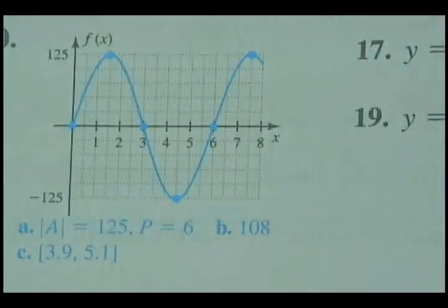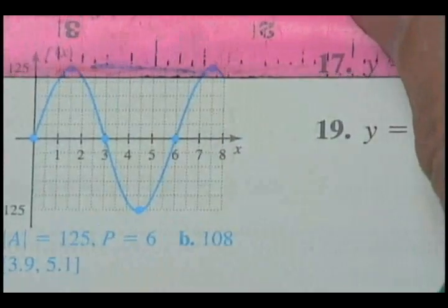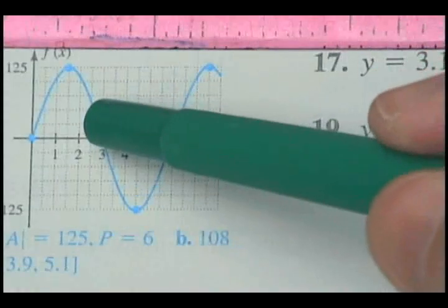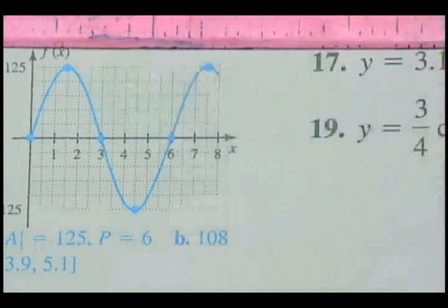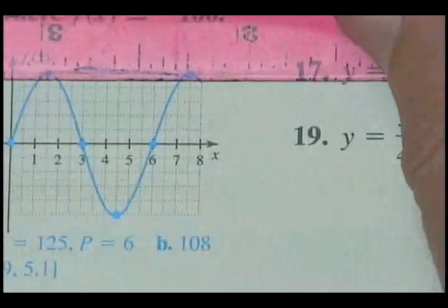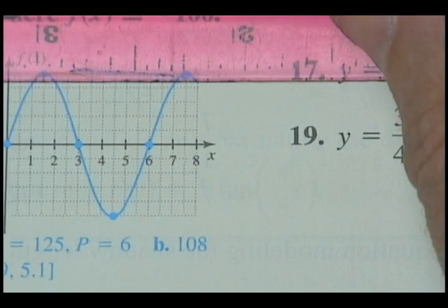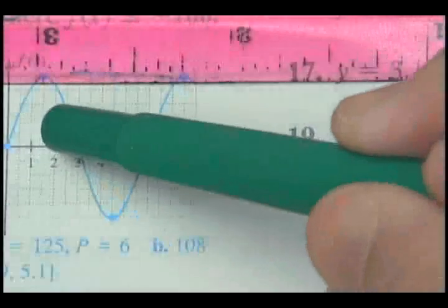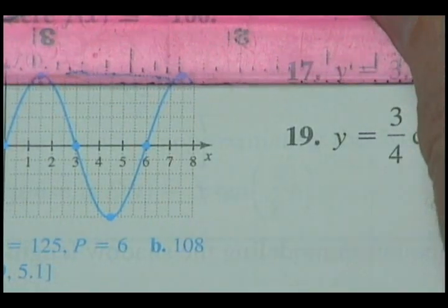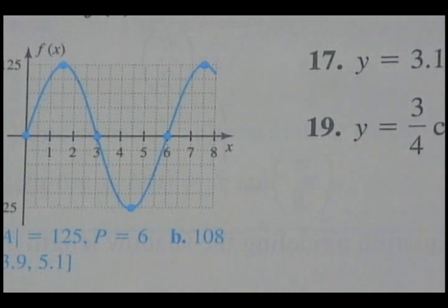For part B, try to estimate when x equals 2. If 125 is at the top, figure out what the increments are — roughly in 25s. So going up to x equals 2, you'd be at about 25, 50, 75, 100, and it's just above that mark, so they're coming up with about 108. I would have probably said about 105 or 110.